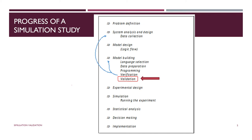The verification phase — we're going to talk about the difference between verification and validation. Basically, verification is similar in concept to debugging the program. And then here we have validation. You can see how we could validate back to the model building stage, or we could validate back to the real-world system. Once we finish the validation stage, we have a valid simulation model to work with and we finish constructing our experimental design.